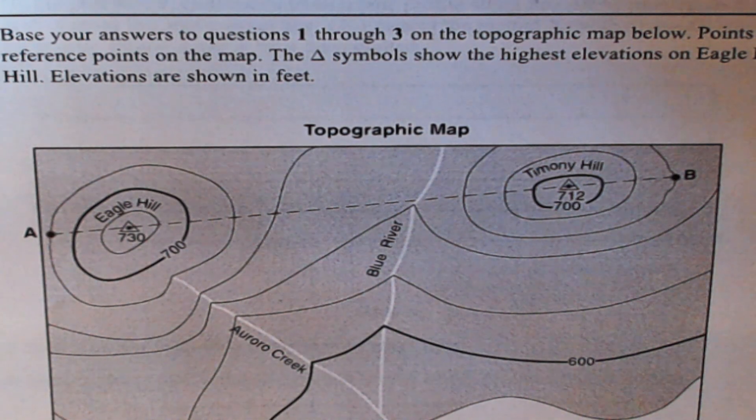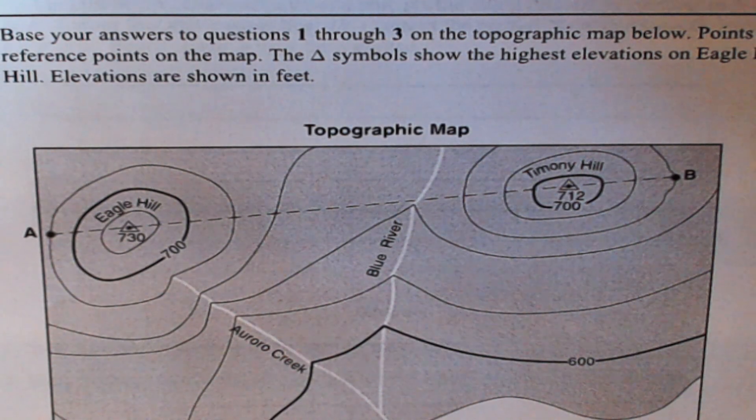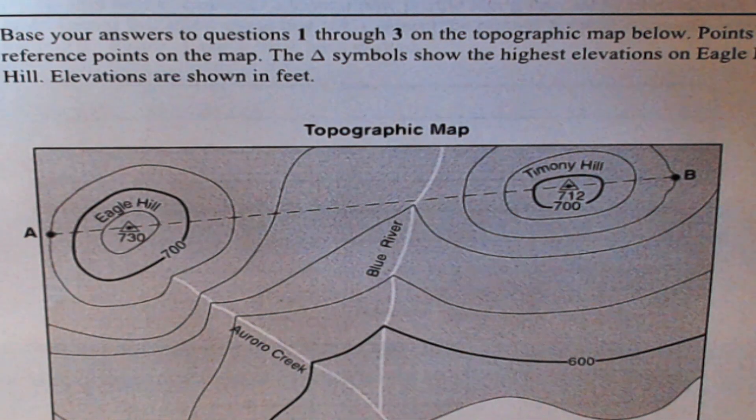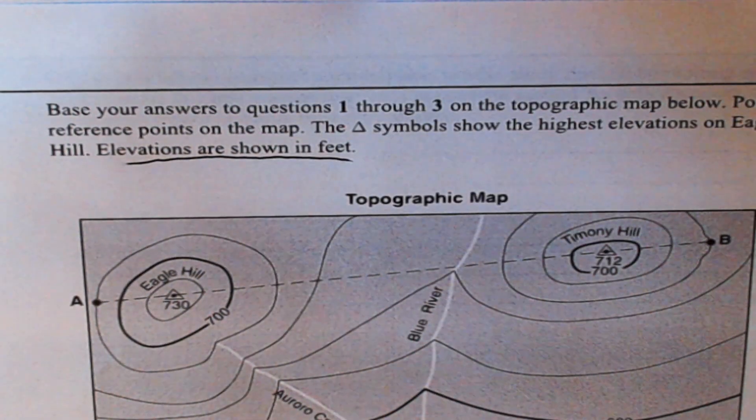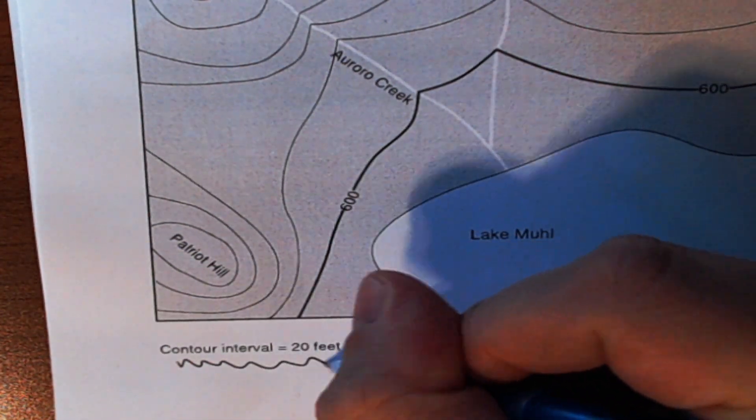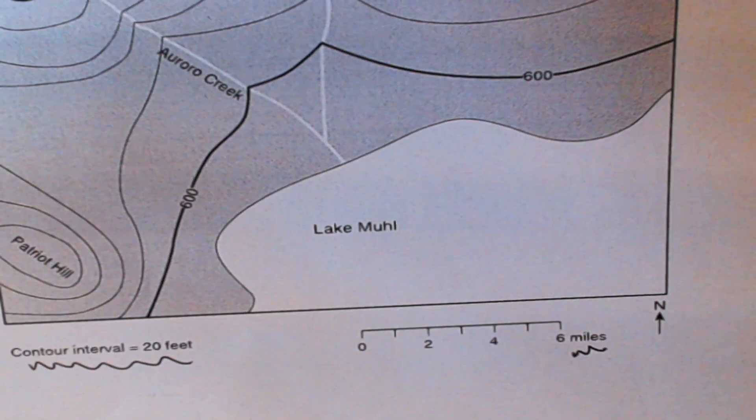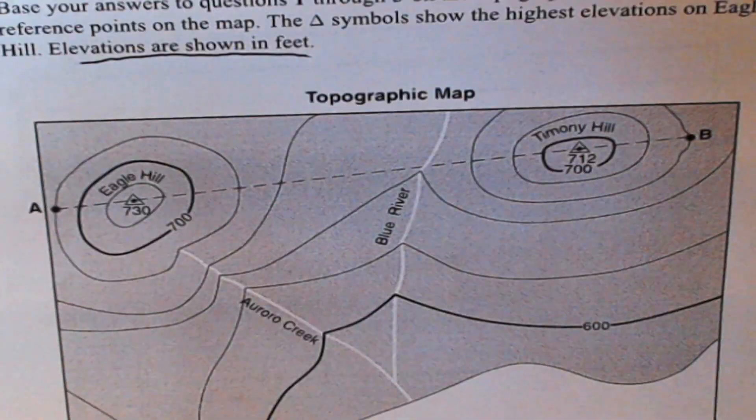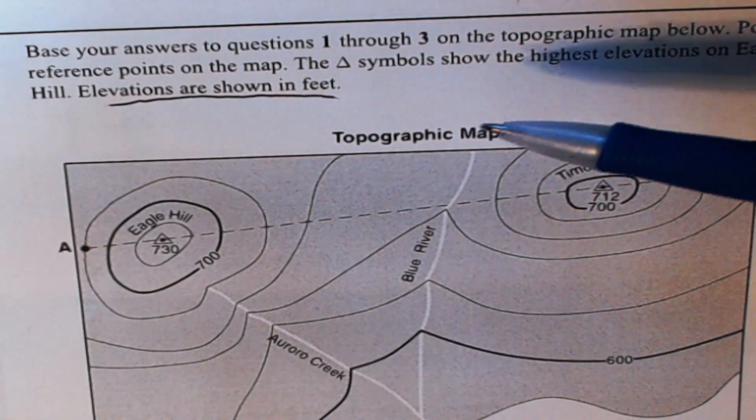So here's an example map. It says base your answers to questions 1 through 3 on the topographic map below. Points A and B are reference points on the map. The triangle symbols show the highest elevations on Eagle Hill and Timony Hill. Elevations are shown in feet. Now that's actually very important to know that the elevations are shown in feet. Sometimes you might see the contour interval given to you at the bottom of the map. That means what each line goes up by. The scale distance here is in miles and over here is a compass. If there is no unit on the map, check the top reading because 99% of the time it's going to tell you in there.